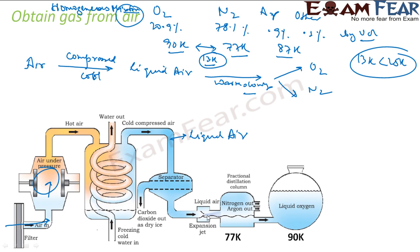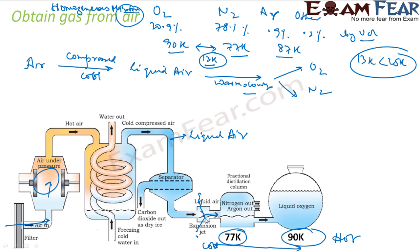Now we have liquid air and we slowly start warming it. One side is hotter and one side is cold. This area is at 77 Kelvin temperature and this is at 90 Kelvin. We keep the temperature in this range. As the liquid air comes out through an expansion jet, when we reach 77 K, nitrogen gas — which has a boiling point of 77 Kelvin — will evaporate first. The nitrogen gas is collected through a pipe.